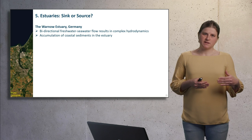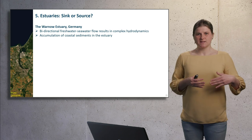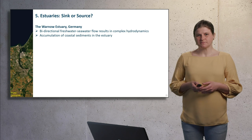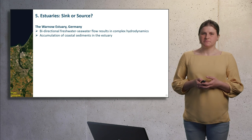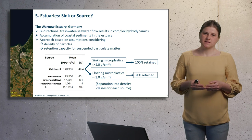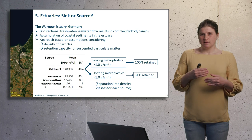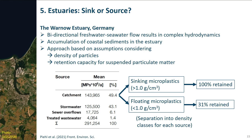For example, sinking particles are predominantly directed landwards with a high saline bottom layer, and in the city area flow velocities are decreased, which promotes sinking and deposition of particles. To estimate retention within the estuary, we grouped microplastic emissions according to their relative share for each emission source into a high and low density class. For the low density class — the floating particles — we assumed a retention of 31% as reported for suspended material in the estuary, to account for density-changing processes. For sinking particles, we assumed that they were completely retained. Utilizing this approach, we could provide a range of microplastic emissions from the estuary to the coast, and the retention scenario would cut the emissions to the coast by half.